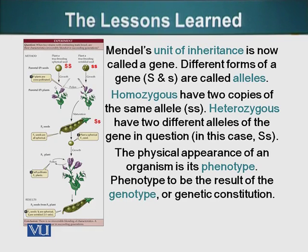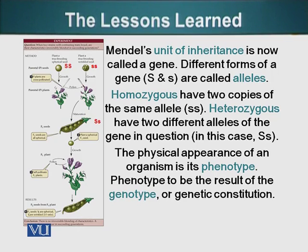As we can see on screen, the F1 plants have capital S and small s, so their phenotype — their appearance — is spherical seeds. However, they do contain a gene for wrinkled seeds as well, which became apparent in the F2 generation. Although F1 plants had all spherical seeds, the wrinkled seed trait reappeared in F2 at a ratio of one to four.